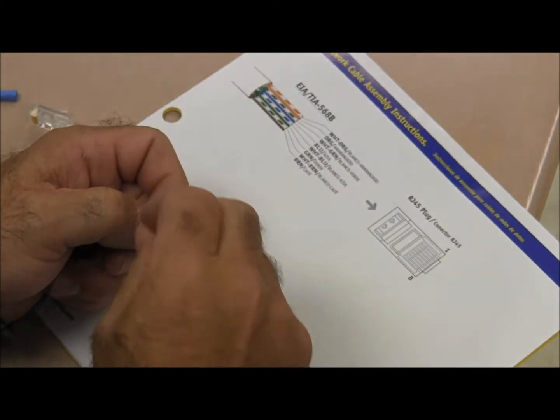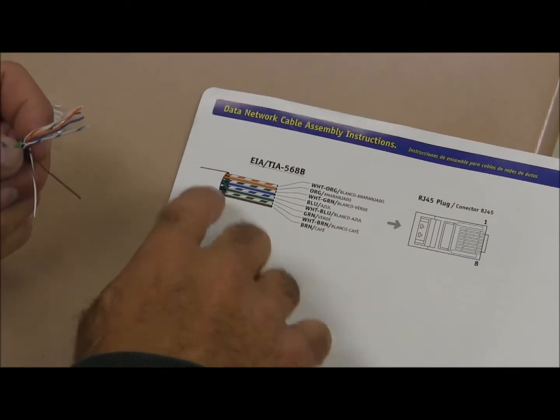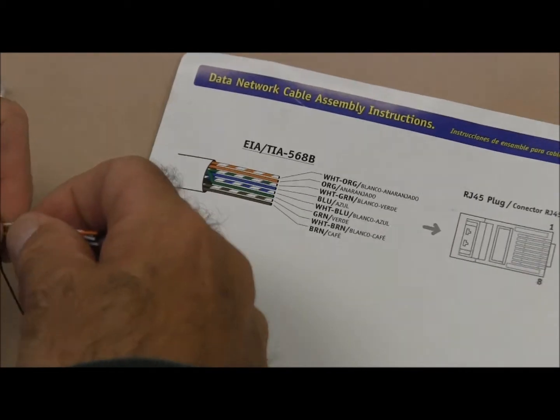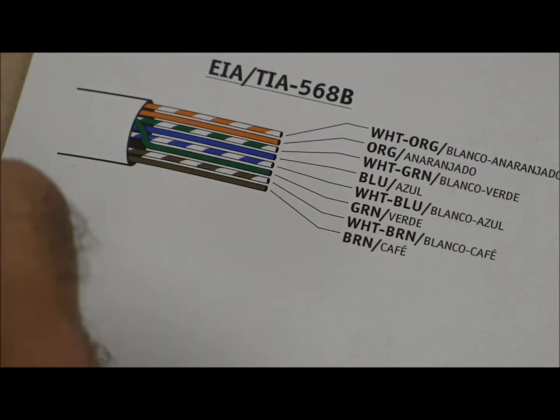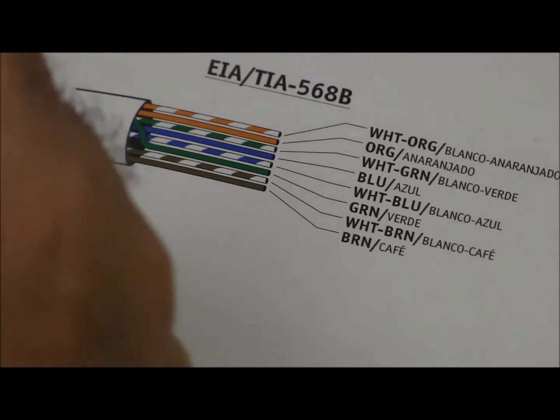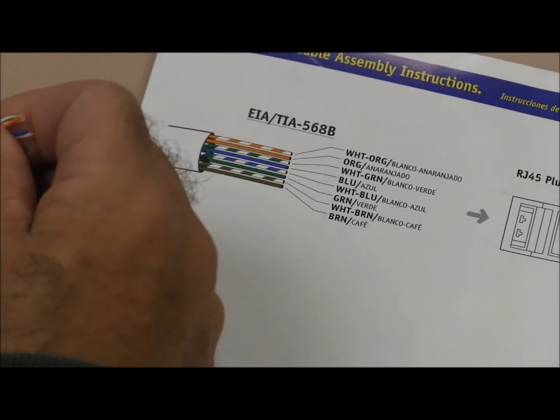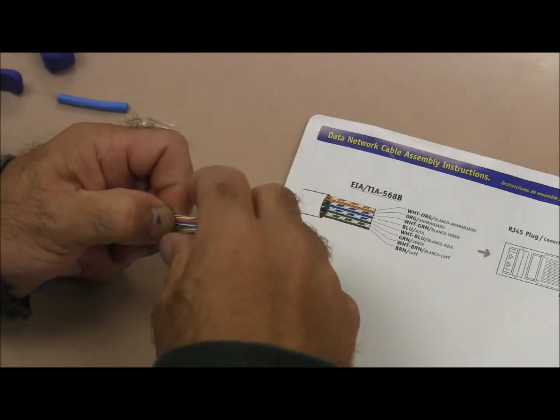The next wire that we will be going into is the blue stranded wire. The green, solid green, will be wrapped over. If you see on the drawing, it is going to be wrapped over the front face and up next to the blue stranded wire. The following corresponding wire is the stranded or the white and brown wire. And the last one is the solid brown.